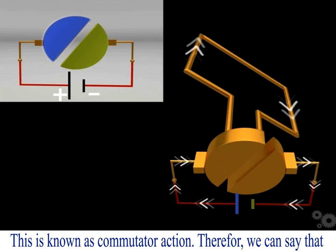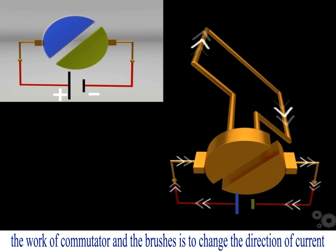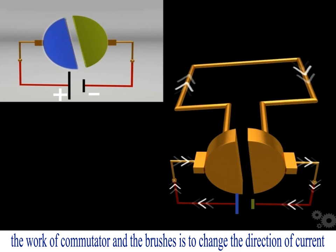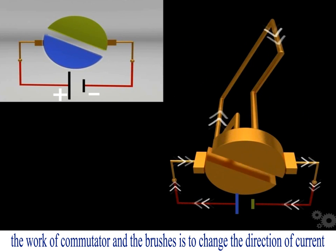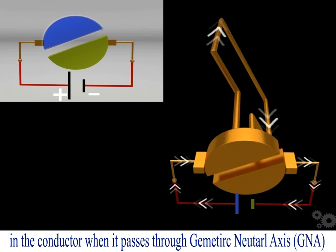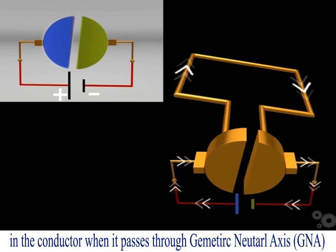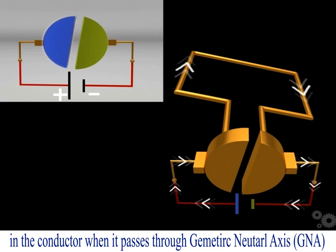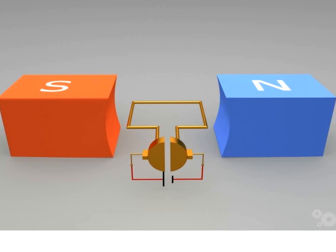Therefore, the work of the commutator and brushes is to change the direction of current in the conductor when it passes through the geometric neutral axis (GNA). This is how a DC motor works.